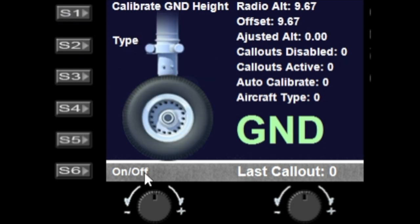If you press S1 that would calibrate, so I'm going to do that now. Ground height calibrated while aircraft is flat on the ground. There you go, the calibration has been completed while it's flat on the ground and you can see the offset that's been applied is the same as the current radio height, therefore the adjusted altitude is set to zero so it now knows the actual wheel height to the ground.